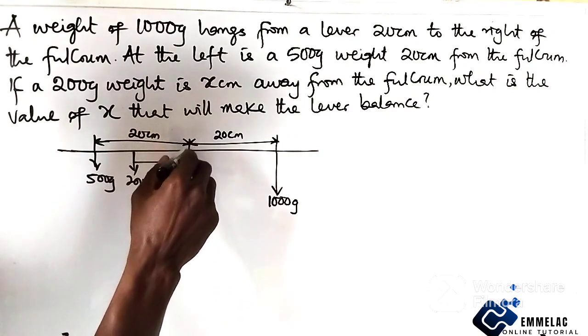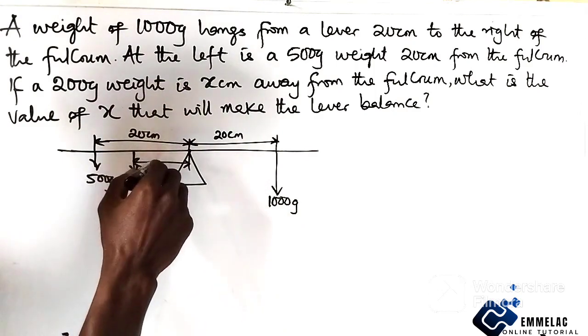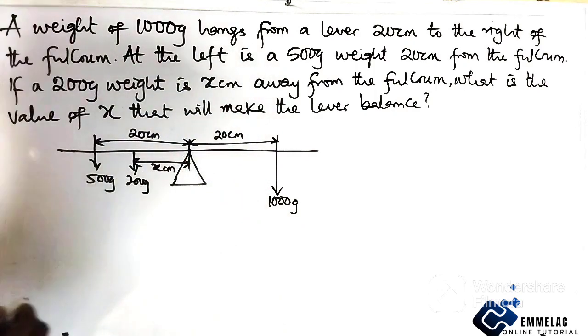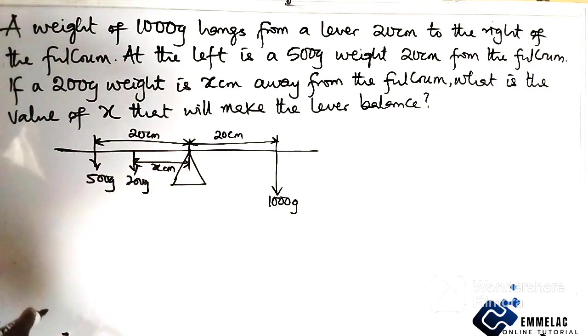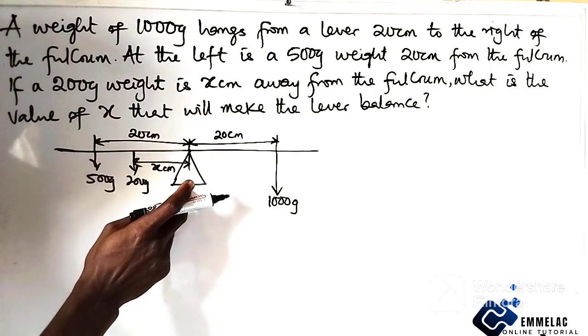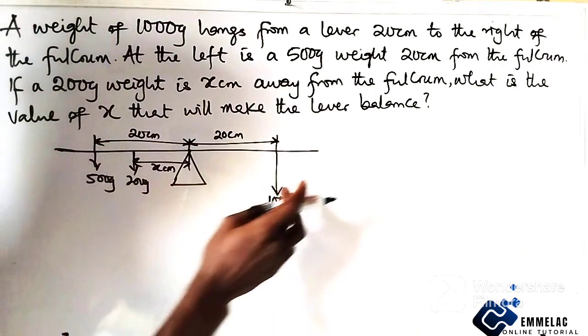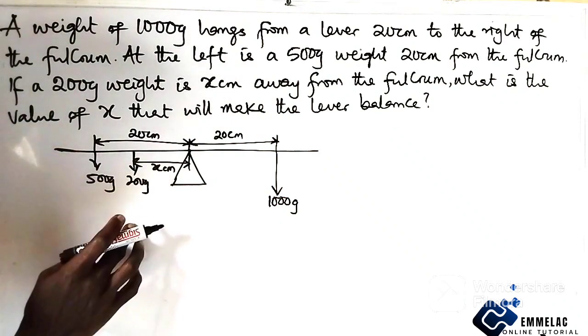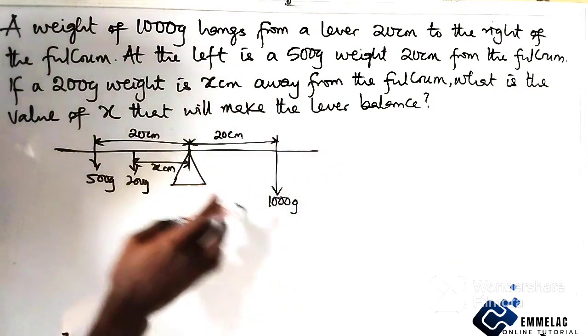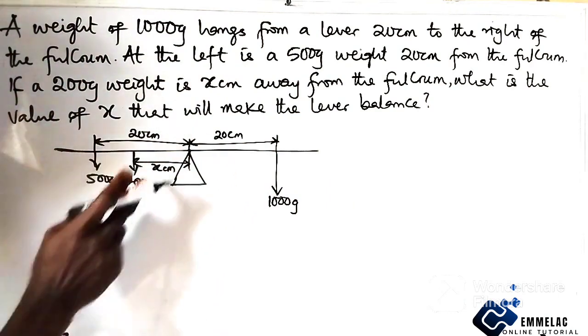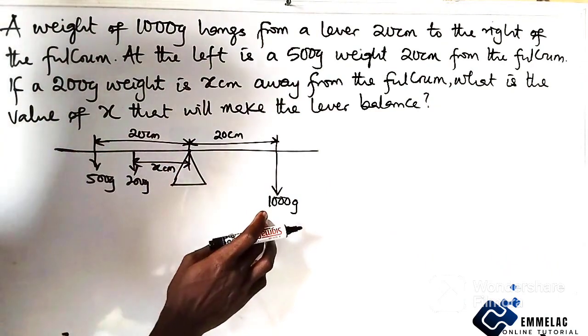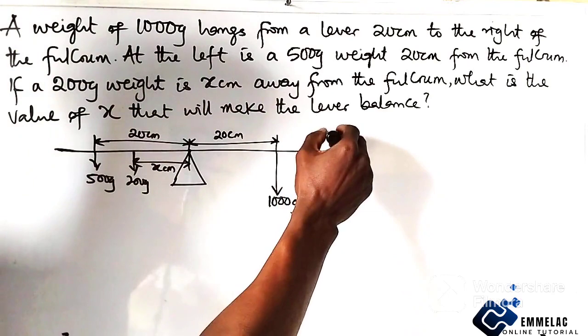So here we have the distance x centimeters. Okay, so from here let us take moment about the pivot or the fulcrum. So the clockwise here must be equal to the anticlockwise, so the total sum of the clockwise moment must be equal to the total sum of the anticlockwise moment. So from here, for the clockwise moment we have 1000 times 20, which is 20,000.